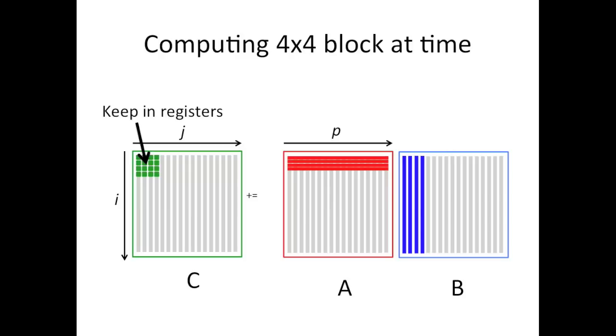by viewing these as a block of A and a block of B. So the dark red there is a block of A, and the dark blue here is a block of B. And we're doing 16 simultaneous dot products.